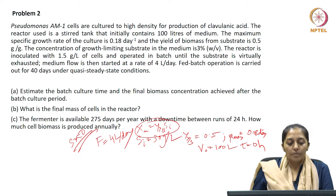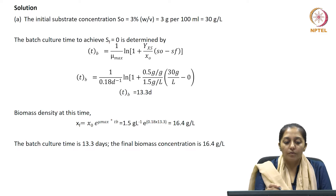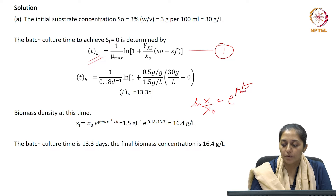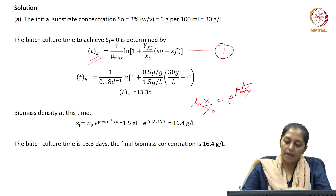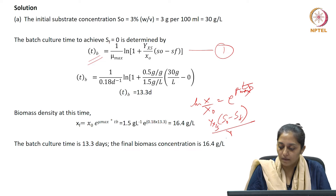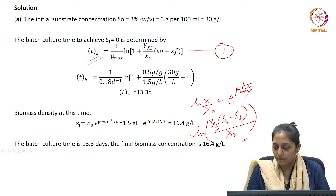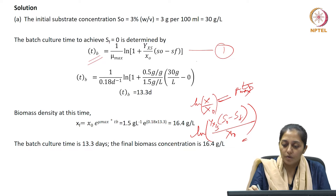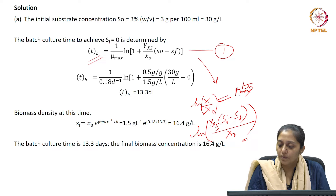Estimate the batch culture time and the final biomass concentration achieved at the batch culture period. For batch culture time, assuming this culture is growing at its maximum specific growth rate, we use the expression: ln(X/X0) equals mu max times t_b. Here X equals X0 plus Yx/S times (S0 minus Sf), where Sf is the final substrate concentration.